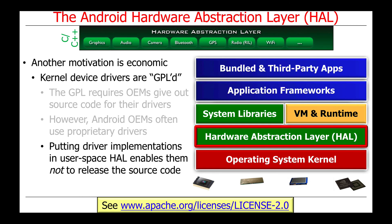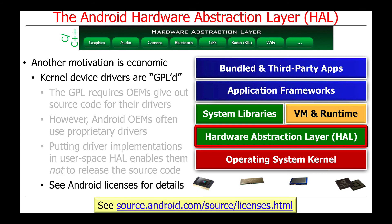Therefore, by using a user space hardware abstraction layer rather than a kernel space abstraction layer, there's no requirement for OEMs to release the source code for their HAL drivers, because those drivers are released under an Apache license — which is much more liberal in allowing whoever releases the code to put a binary-only version out rather than requiring them to also release the source code as the GPL does. You can see more information about the Android licenses at the link at the bottom of this page. There are a number of different licenses in Android, so it's important to know which one you're dealing with when working on any particular layer of the Android software.